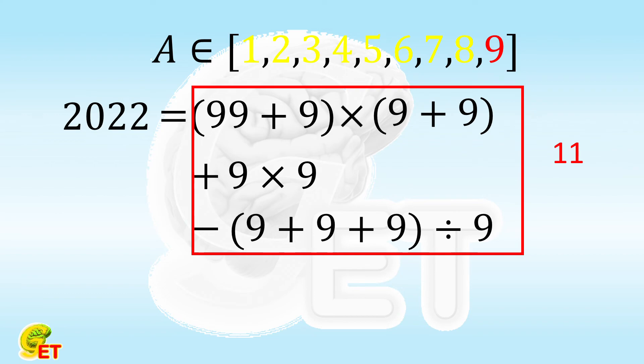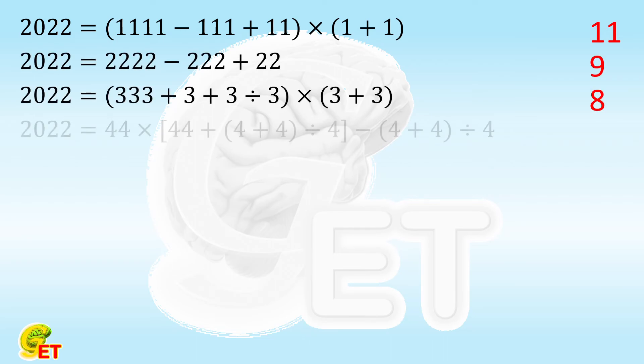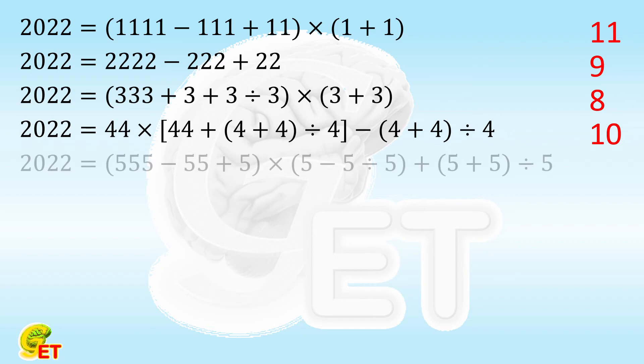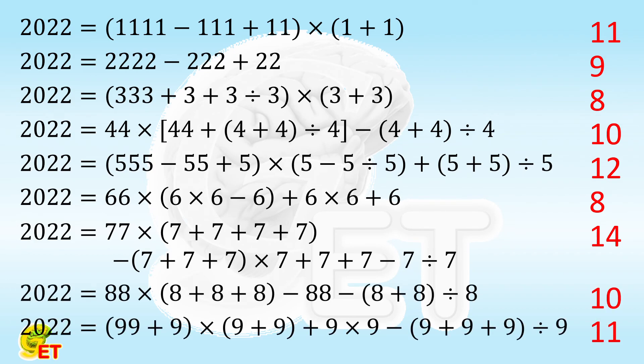In conclusion, we may use 1 for 11 times, or 2 for 9 times, or 3 for 8 times, or 4 for 10 times, or 5 for 12 times, or 6 for 8 times, or 7 for 14 times, or 8 for 10 times, or 9 for 11 times to represent 2022.